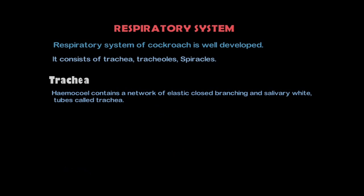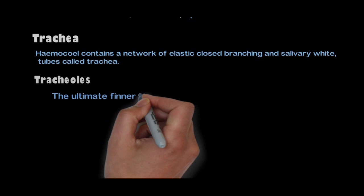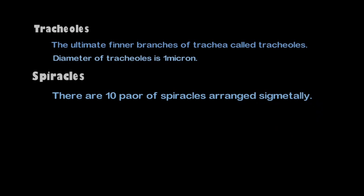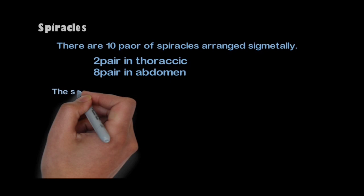Respiratory System: The respiratory system of the cockroach is well developed. It consists of trachea, tracheoles, and spiracles. The hemocoel contains a network of elastic, branching, silvery-white tubes called trachea. The ultimate final branches of the trachea are called tracheoles, with a diameter of one micron. There are 10 pairs of spiracles arranged segmentally: two pairs in the thorax and eight pairs in the abdomen. The spiracles are opened and closed by valves regulated by spiracular muscles.